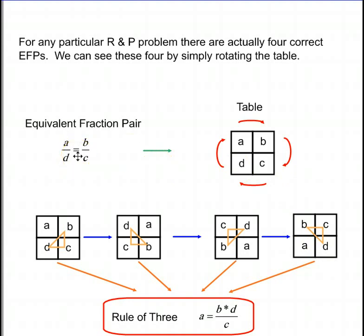Here we have an equivalent fraction pair, a over d equals b over c, and here it is in a table. Now we can rotate this table clockwise, so from a over d, b over c, we have d over c equals a over b, c over b equals d over a, and b over a equals c over d.